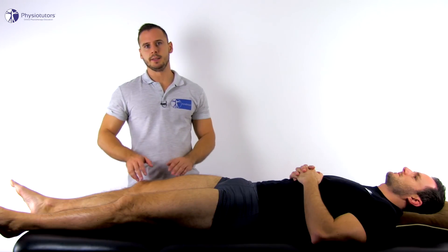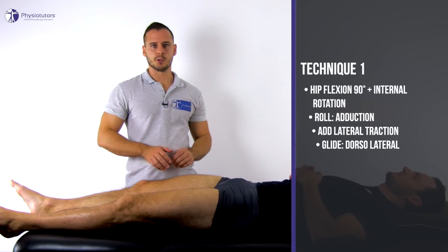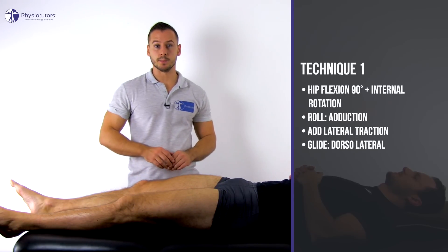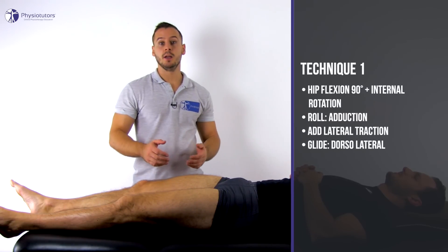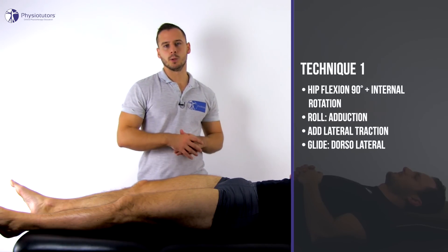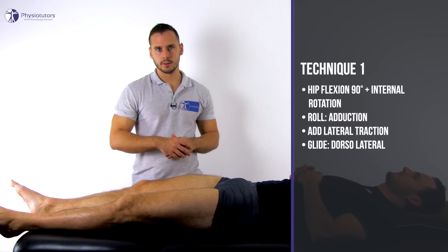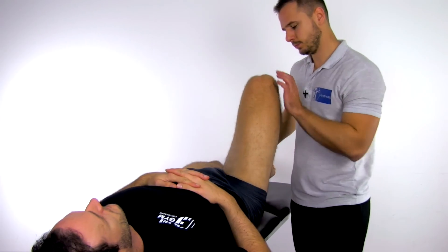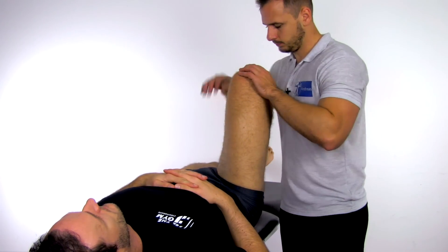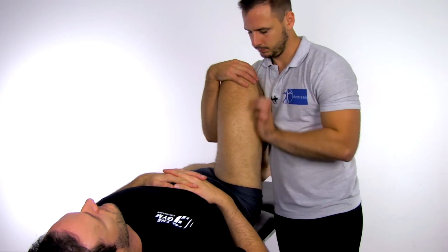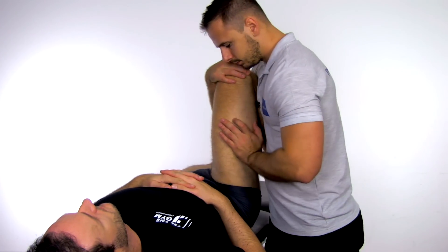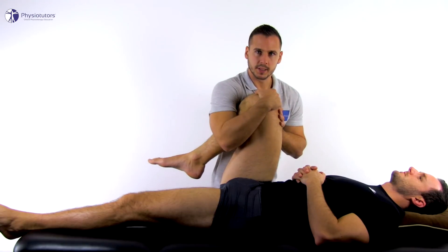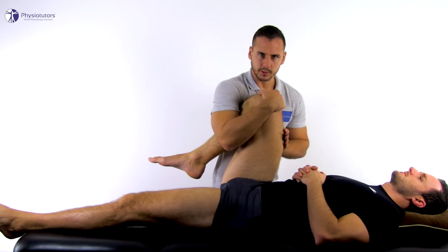For this technique the patient lies in supine position and you are standing on the side you want to examine. The leg is then brought into 90 degrees of flexion and internal rotation, which puts tension on the ischiofemoral ligament.